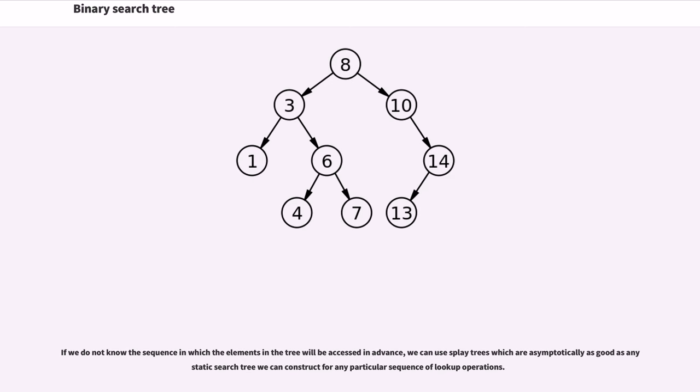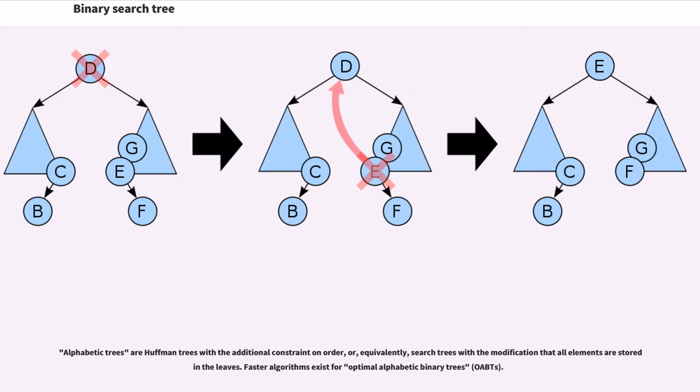If we do not know the sequence in which the elements in the tree will be accessed in advance, we can use splay trees which are asymptotically as good as any static search tree we can construct for any particular sequence of lookup operations. Alphabetic trees are Huffman trees with the additional constraint on order, or equivalently, search trees with the modification that all elements are stored in the leaves. Faster algorithms exist for optimal alphabetic binary trees (OABTs).